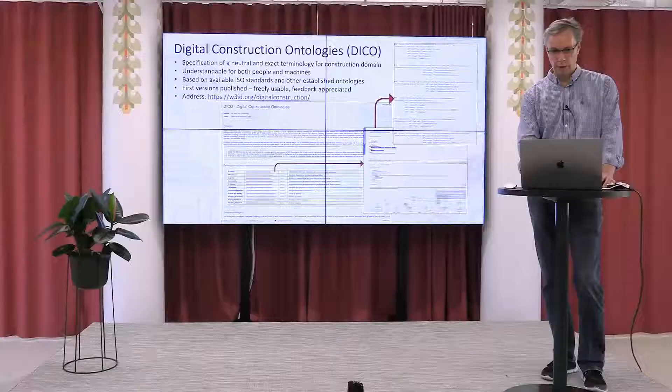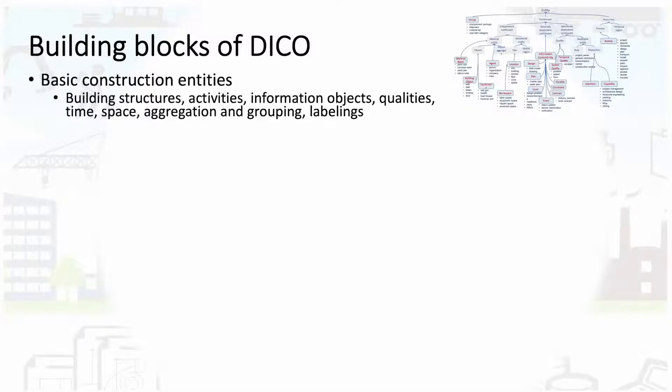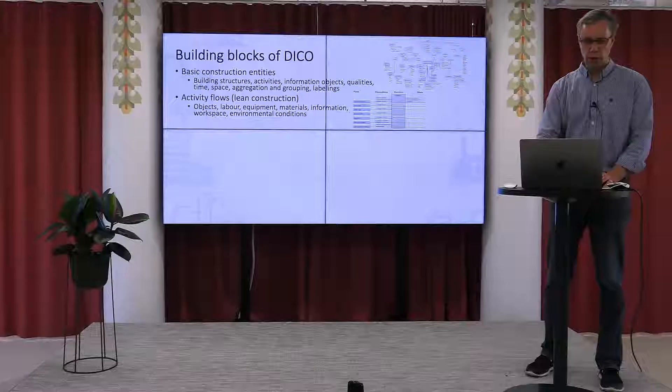The building blocks of DICO start with a backbone — a classification of basic construction entities covering building structures, activities, information objects, qualities, time, space, aggregation and grouping, and labelings. Another important area is activity flows — a flow model that comes from lean construction that describes how different objects come together in activities: the transformed object, labor requirements, equipment, materials, information, location, and environmental conditions.